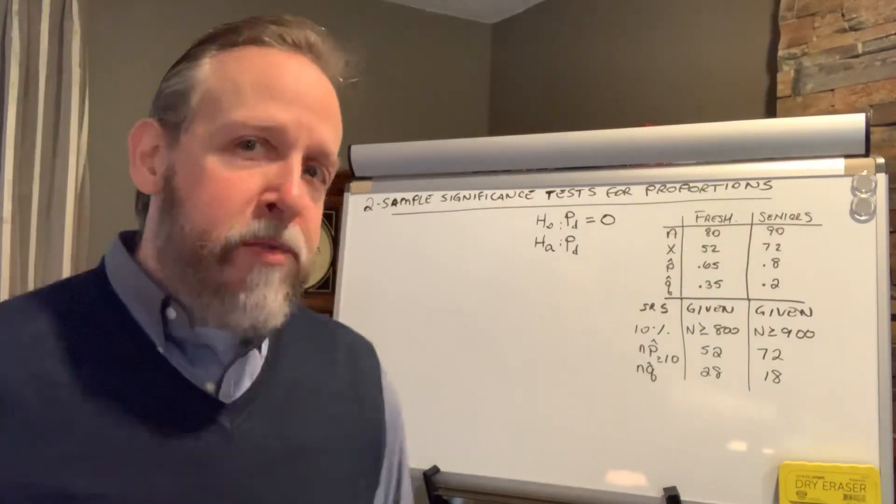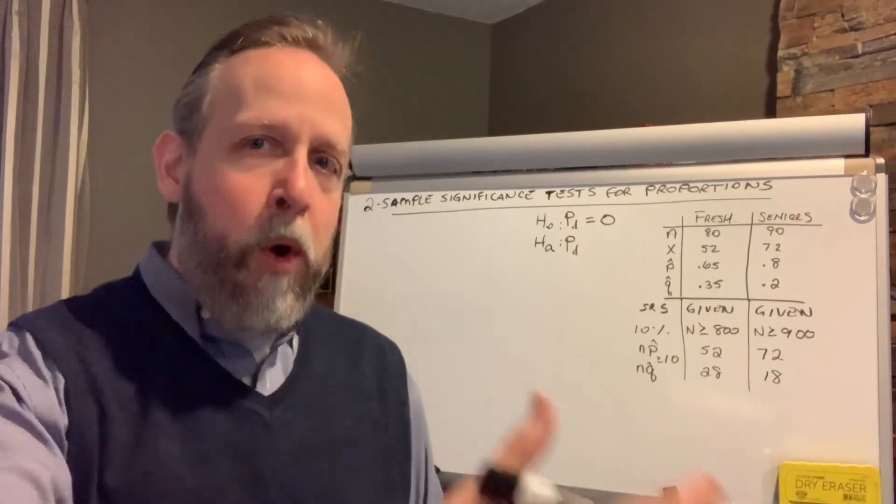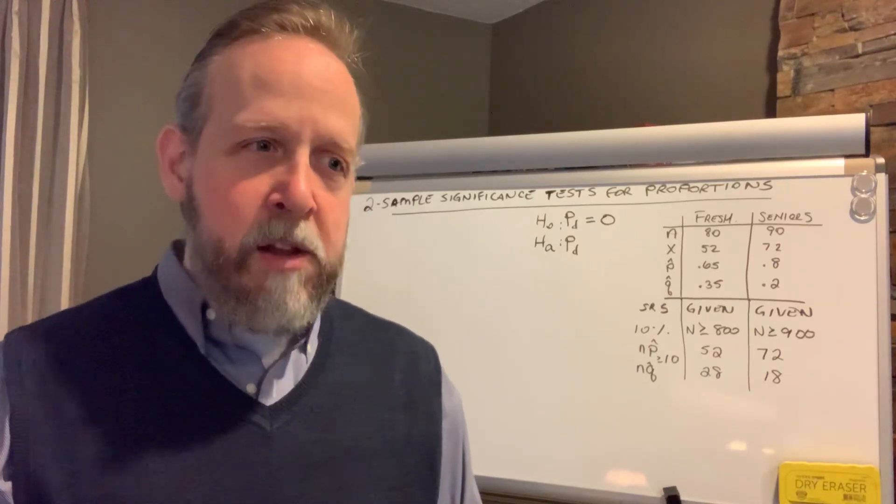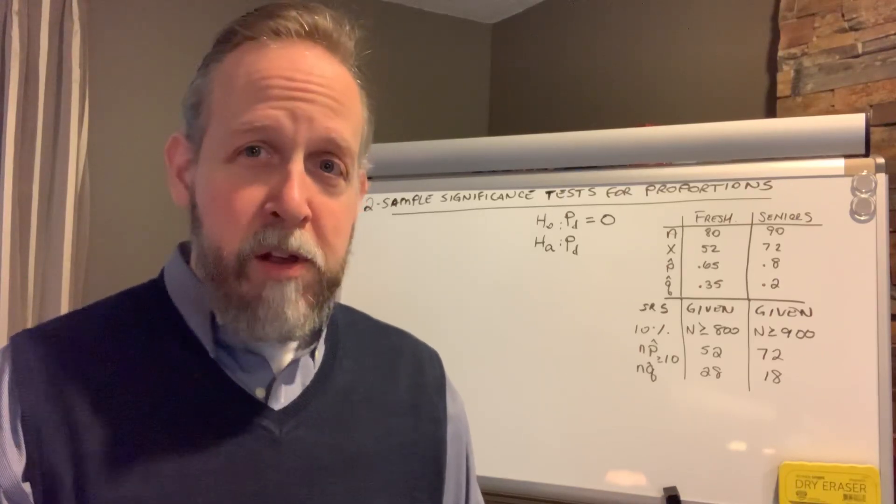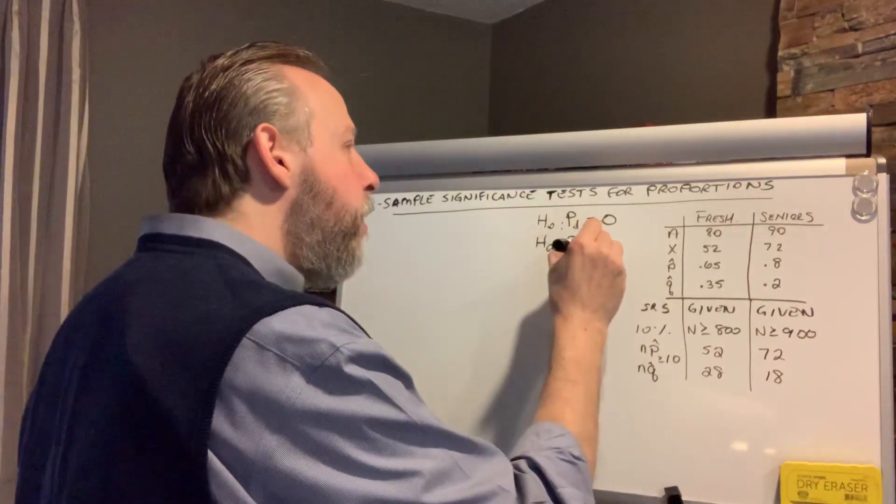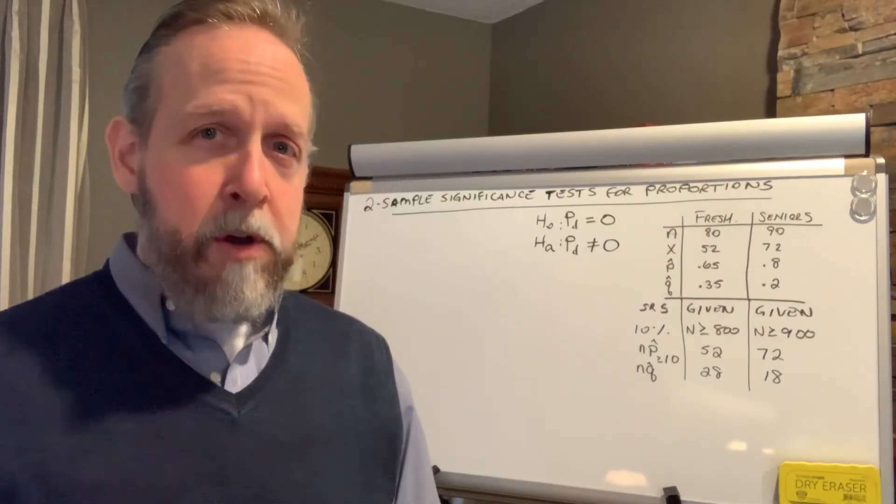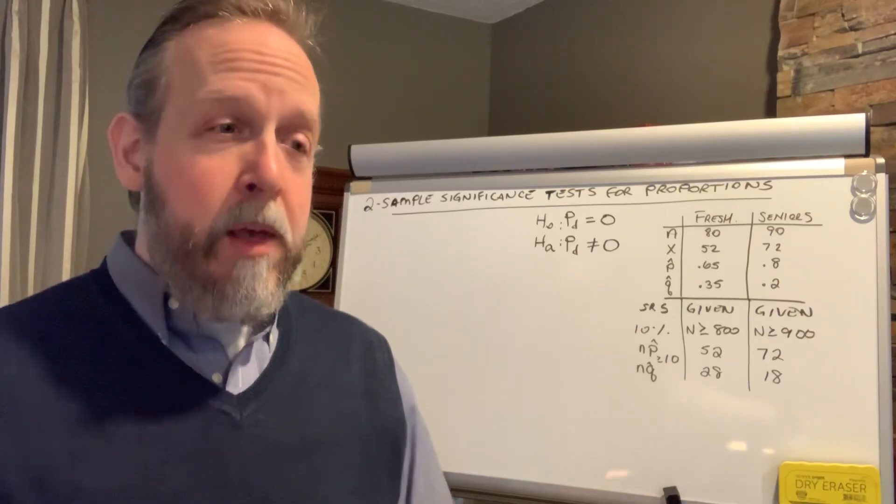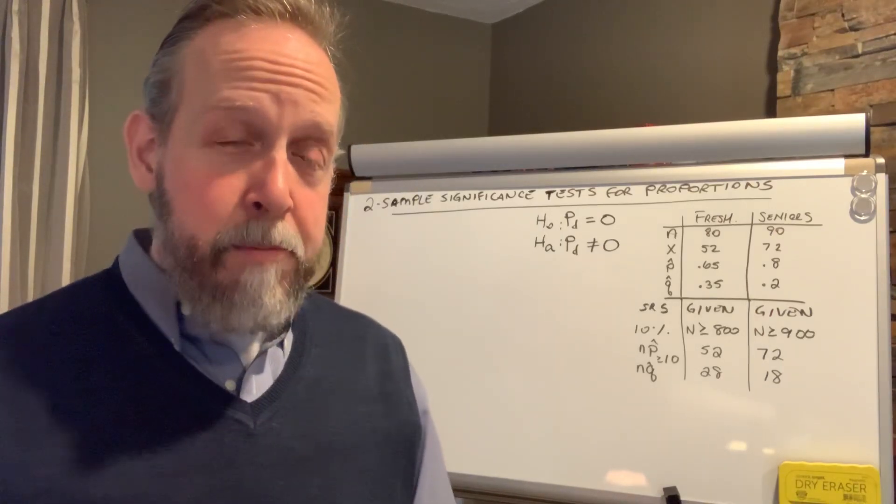If I started off the prompt saying I think seniors like this better, or I think freshmen like this better, that's going to give us one side for the alternate. But I didn't start off that way. I said, is there any difference between them? Well, if the null is that the difference equals zero, my alternate is going to be that the difference does not equal zero. Making this a two-tail test, which you already should know, means at the end, after we find our p-value, we're going to double it. Again, if the prompt gave you one-sidedness, you're going to go with that, but this one did not.